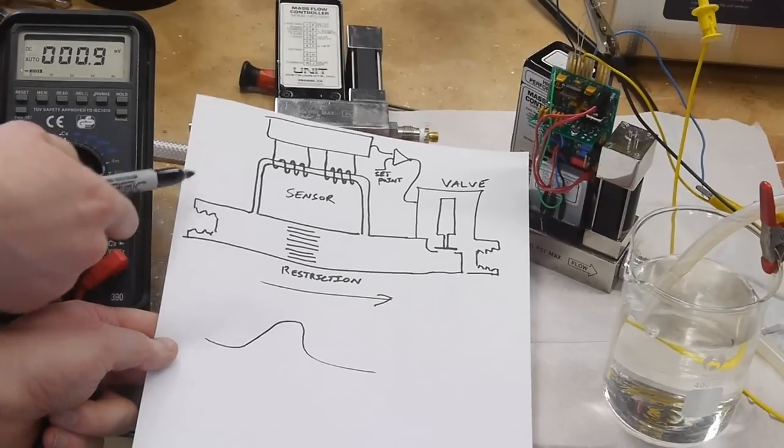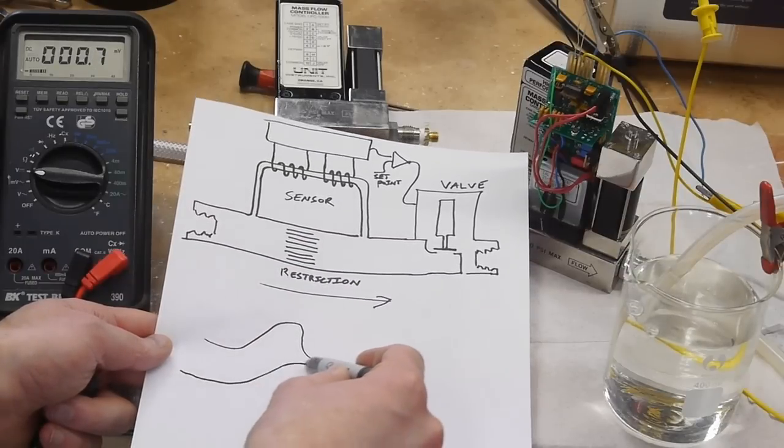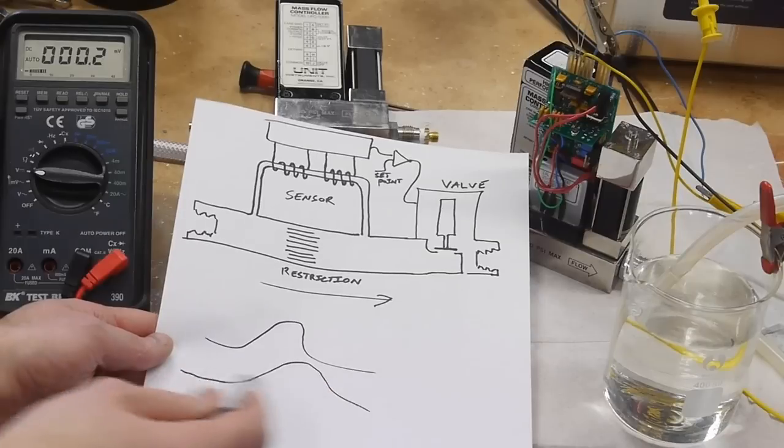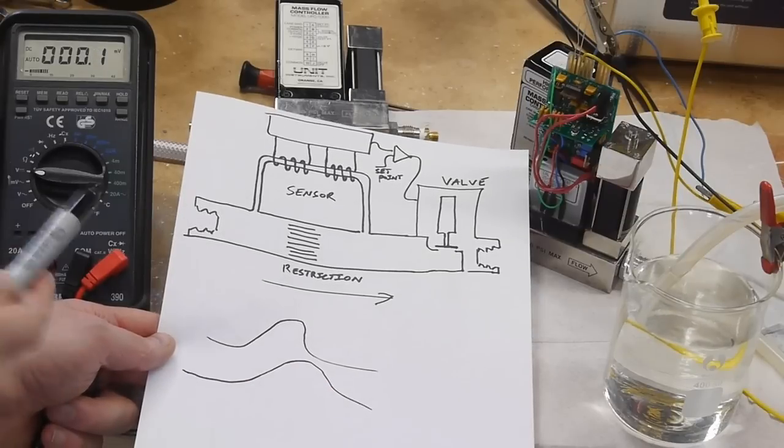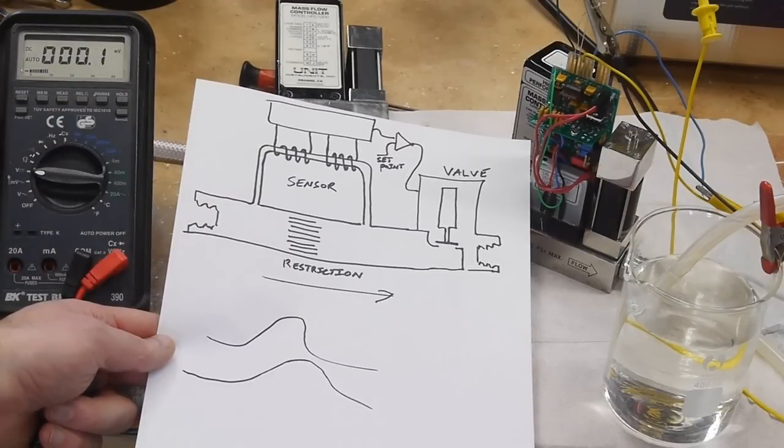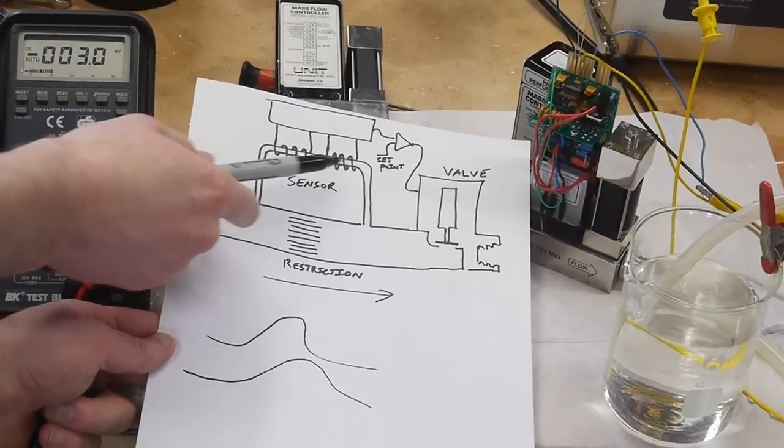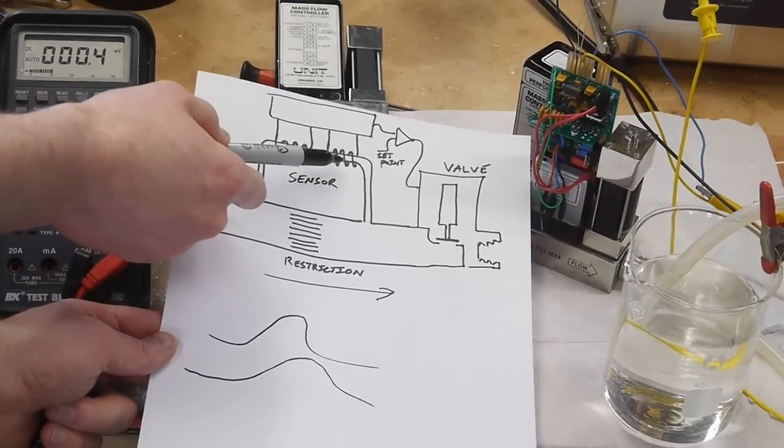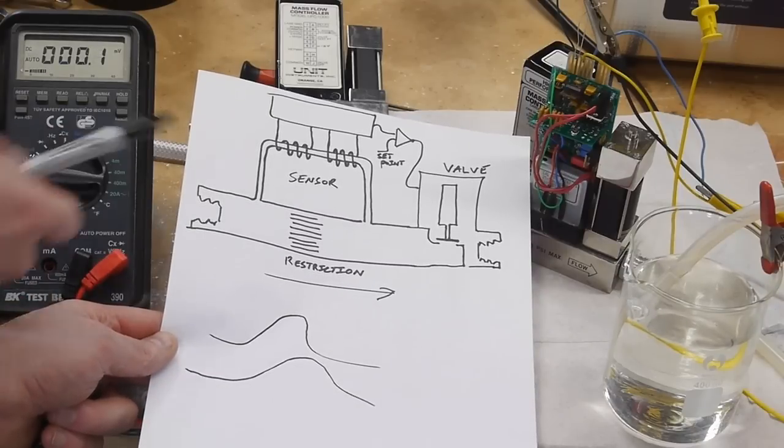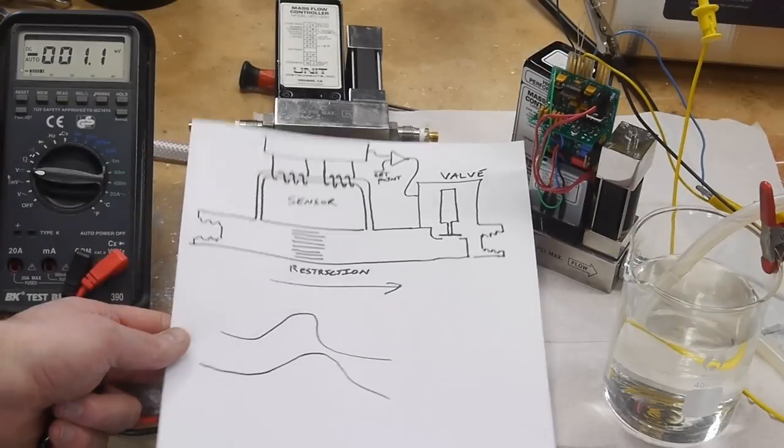However if there's gas flowing through this little sensing tube the profile will look something more like this, it will be shifted over and it will be spread out, it will be a little bit more lopsided. So basically we've got two wound coils around the sensing tube and if there's gas flowing through there the further down part of the tube will be hotter. In other words this coil will be hotter because the temperature profile has shifted over and we can sense that difference with the analog circuitry so we know that there's gas flowing through there.